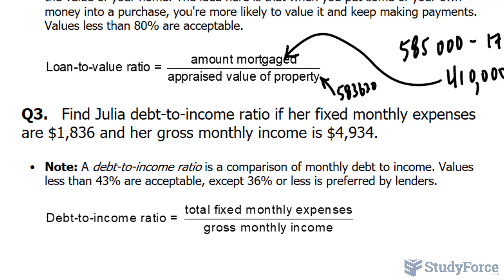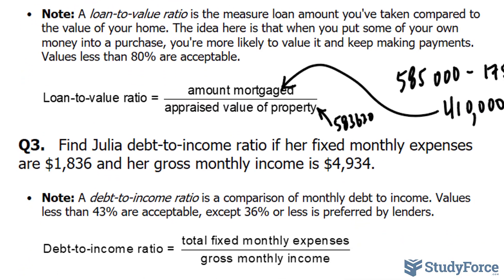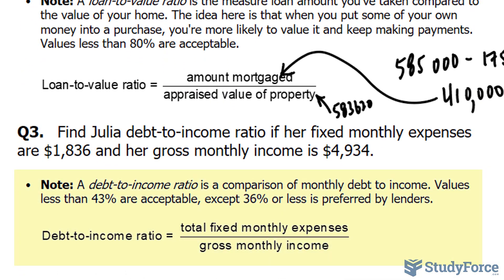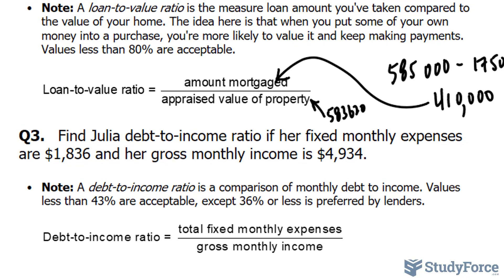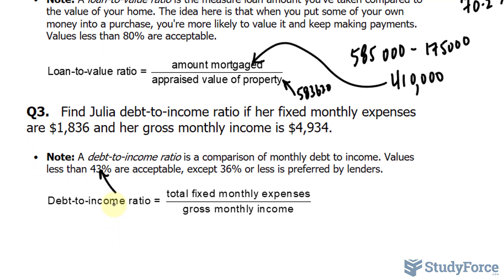Finally, in question three we look at debt to income ratio, which is different from the housing ratio in question one. The debt to income ratio includes the mortgage plus all other payments you need to make, such as water, heating bill, property tax, car payments, and so on. Anything less than 36% is favored, and the maximum is 43% for most lenders' comfort levels. The question: find Julia's debt to income ratio if her fixed monthly expenses are $1,836 and her gross monthly income is $4,934.